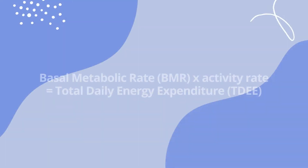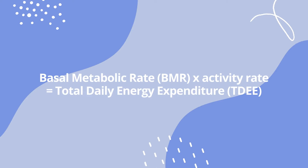Most people struggle with weight gain and loss, so today I'm going to teach you how to lose and gain weight with the calorie formula. The calorie formula is BMR times activity rate equals total daily energy expenditure. The first thing you need to do is calculate your BMR, which is your basal metabolic rate — the energy your body uses every day.